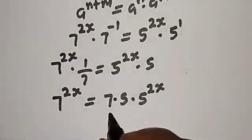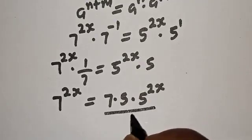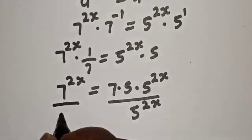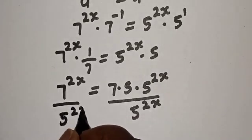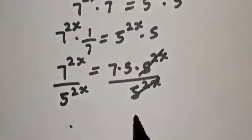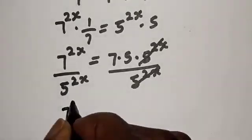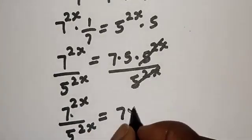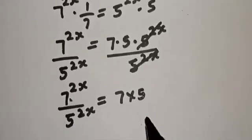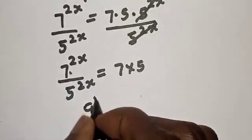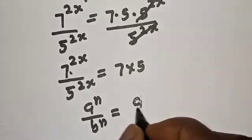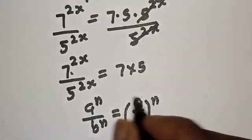Now, let's divide both sides by 5 raised to power 2s. This one will cancel this. We have 7 raised to power 2s over 5 raised to power 2s is equal to 7 times 5. Take note of this rule: if you have a raised to power n over b to the power of n, this is equal to a over b to the power of n.